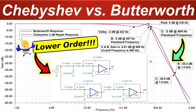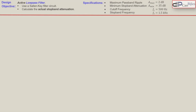Greetings, welcome to a new video about analog filter design. In this example we will discuss a very interesting comparison between the Chebyshev response and the Butterworth response for a design. We will also use the Sallen-Key filter circuits to realize our circuit, and we will see everything step by step in our calculations and verify these in SPICE simulations.